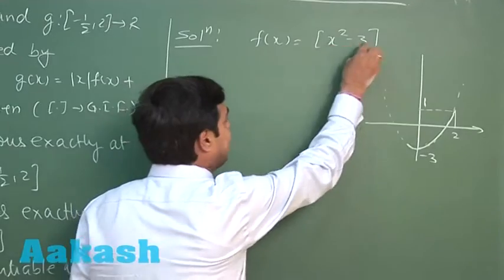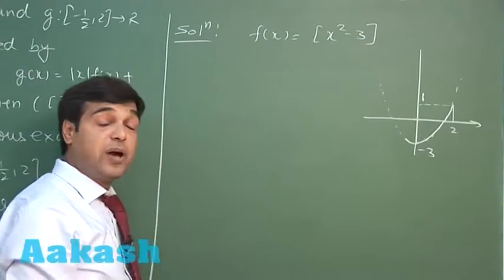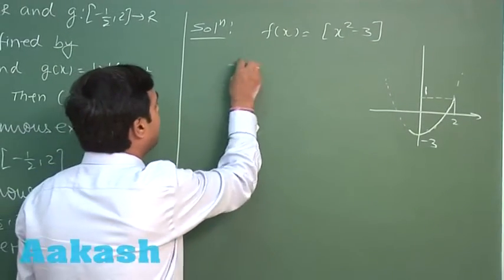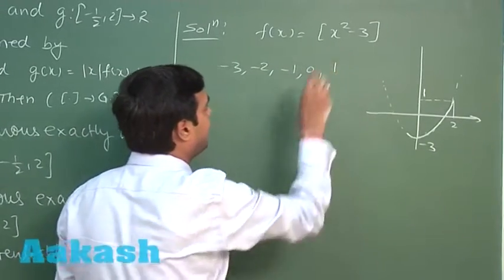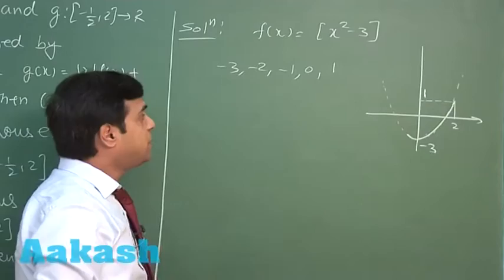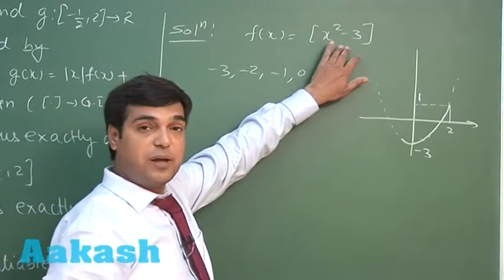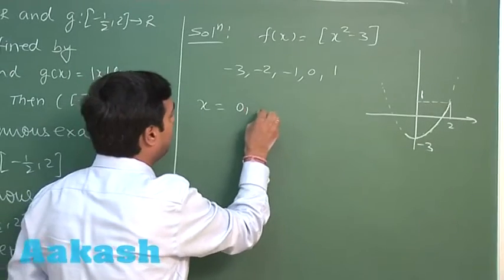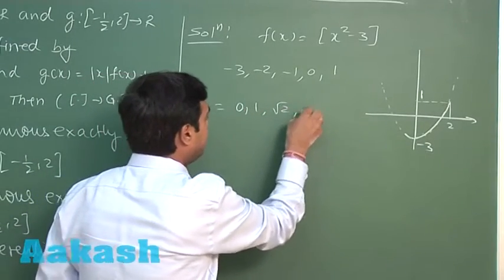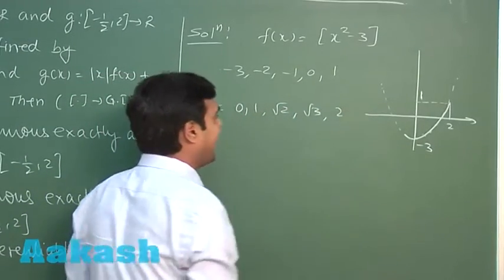So we can see the values, the integral values for the term x squared minus 3 are minus 3, minus 2, minus 1, 0, and 1. On substituting these values for x squared minus 3, we get corresponding values for x as 0, 1, root 2, root 3, and 2.